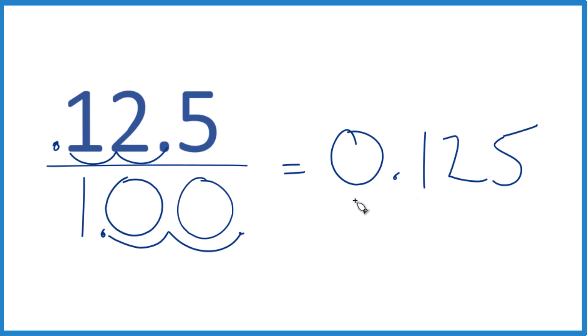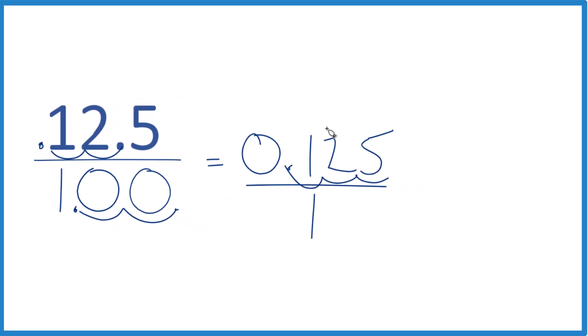Now if we want to get this to a fraction, we could just put it over 1, but we need to get rid of the decimal. We need to multiply by something to get a whole number. If we multiply by 10, we get 1.25, 100 gives us 12.5, and 1000 gives us 125. So we want to multiply by 1000.